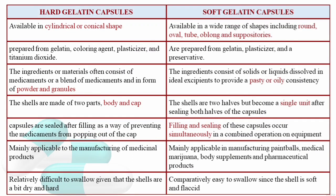Now we'll see the differences between hard gelatin capsules and soft gelatin capsules. Hard gelatin capsules are available in cylindrical or conical shape, whereas soft gelatin capsules are available in round, oval, tube, oblong, and suppository shapes. Hard gelatin capsules are prepared from gelatin, coloring agent, plasticizer, and titanium dioxide as an opacifying agent.